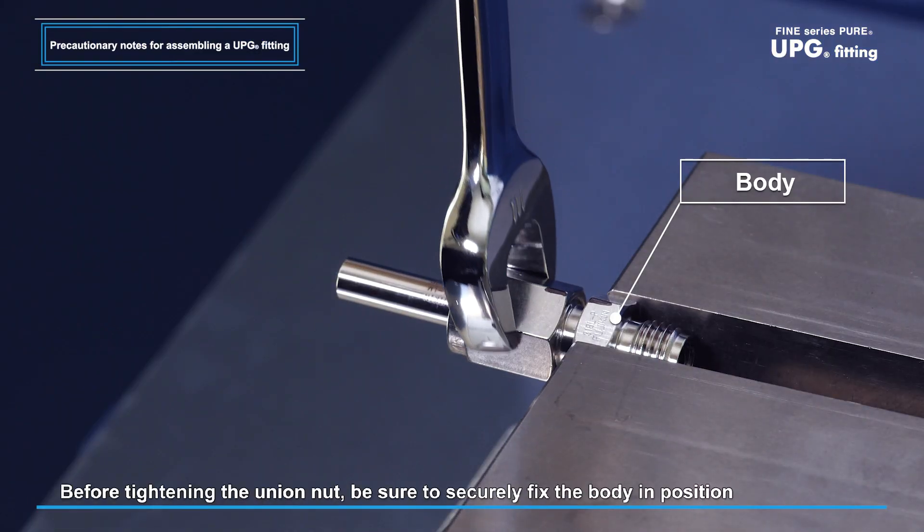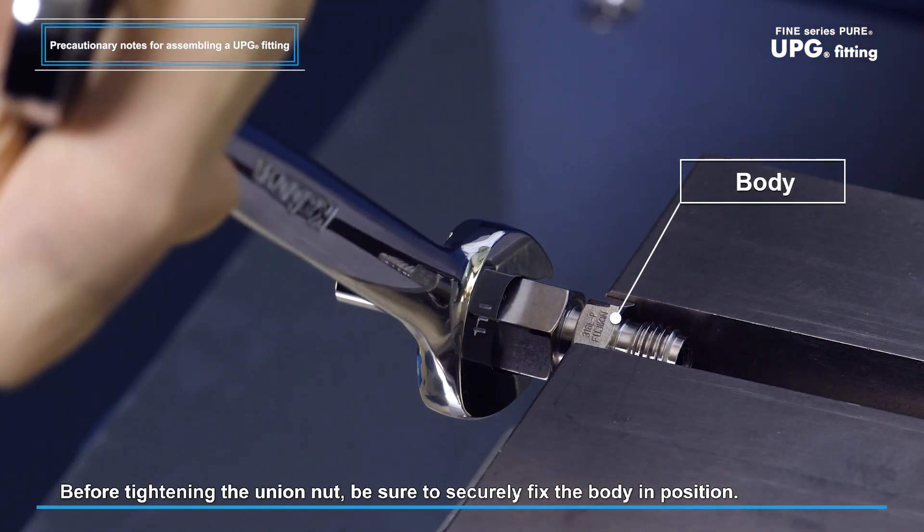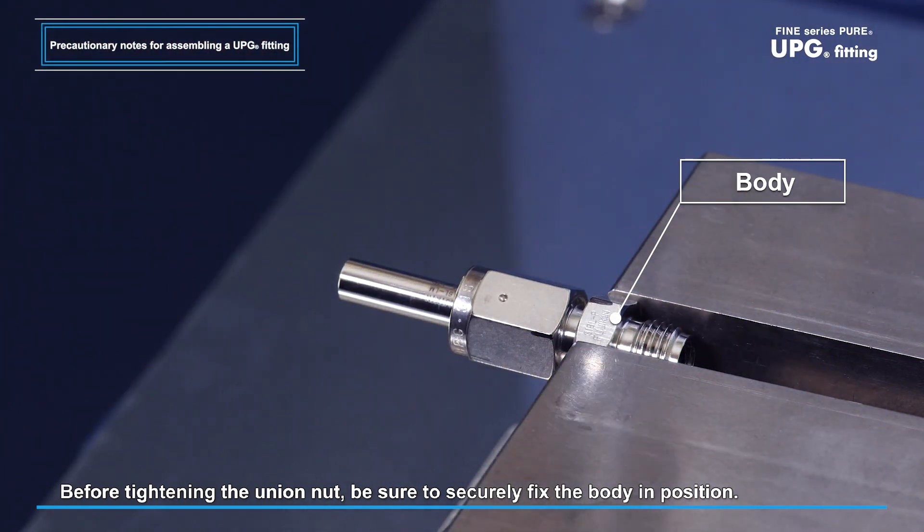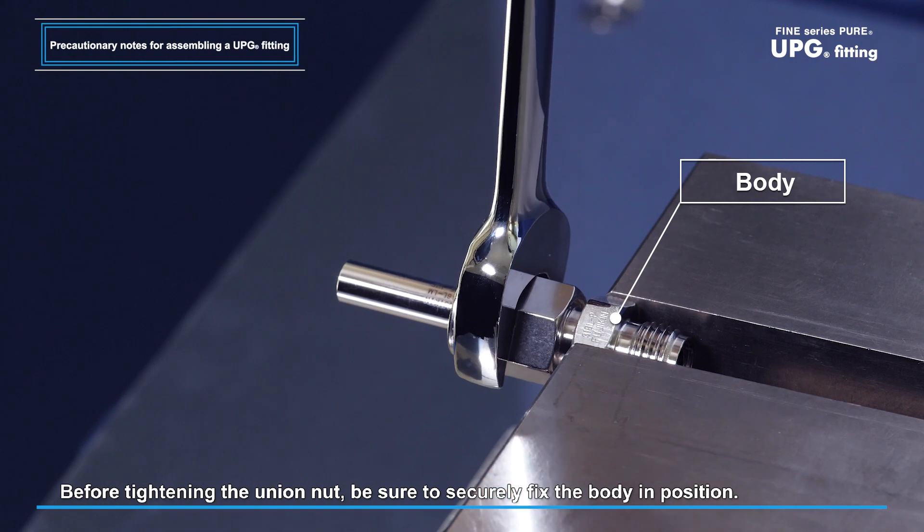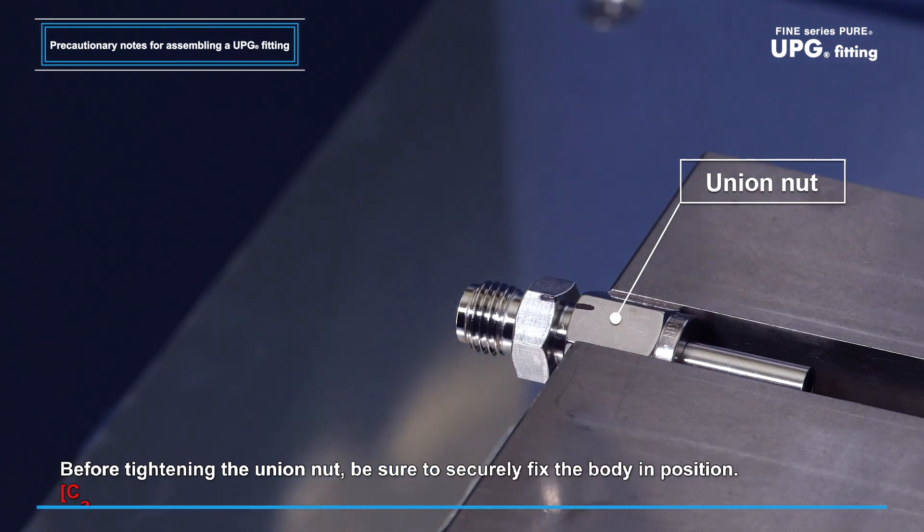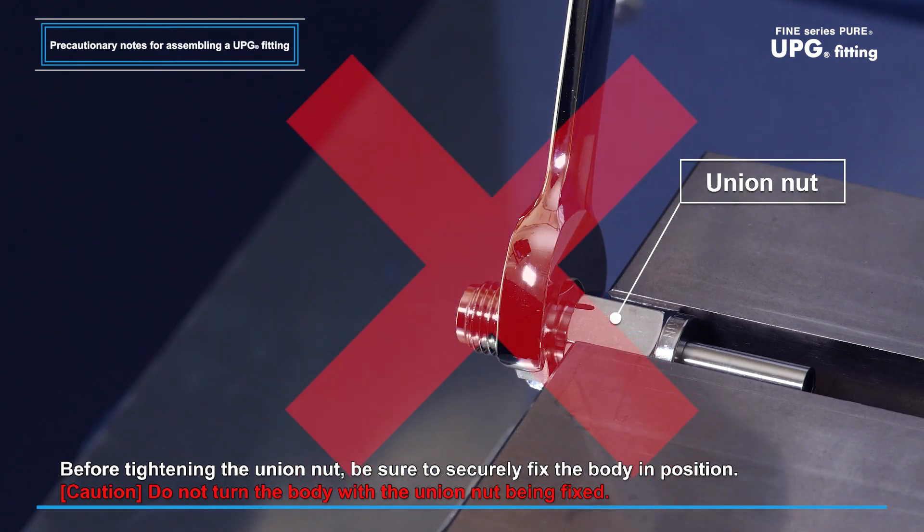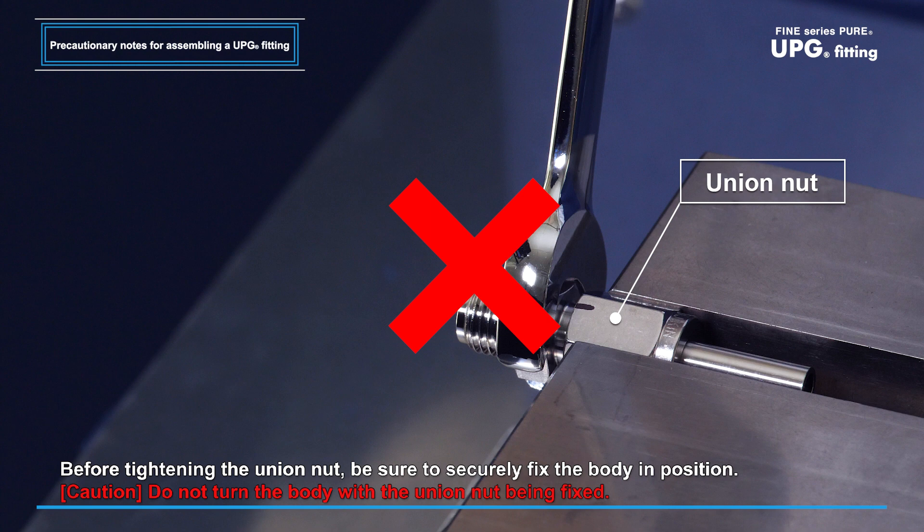When tightening the UPG fitting, be sure to securely fix the body using a wrench or similar means to prevent it from turning, and turn the union nut for tightening. Do not turn the body with the union nut being fixed. Turning the body may damage the seal surface by galling, causing leaks.